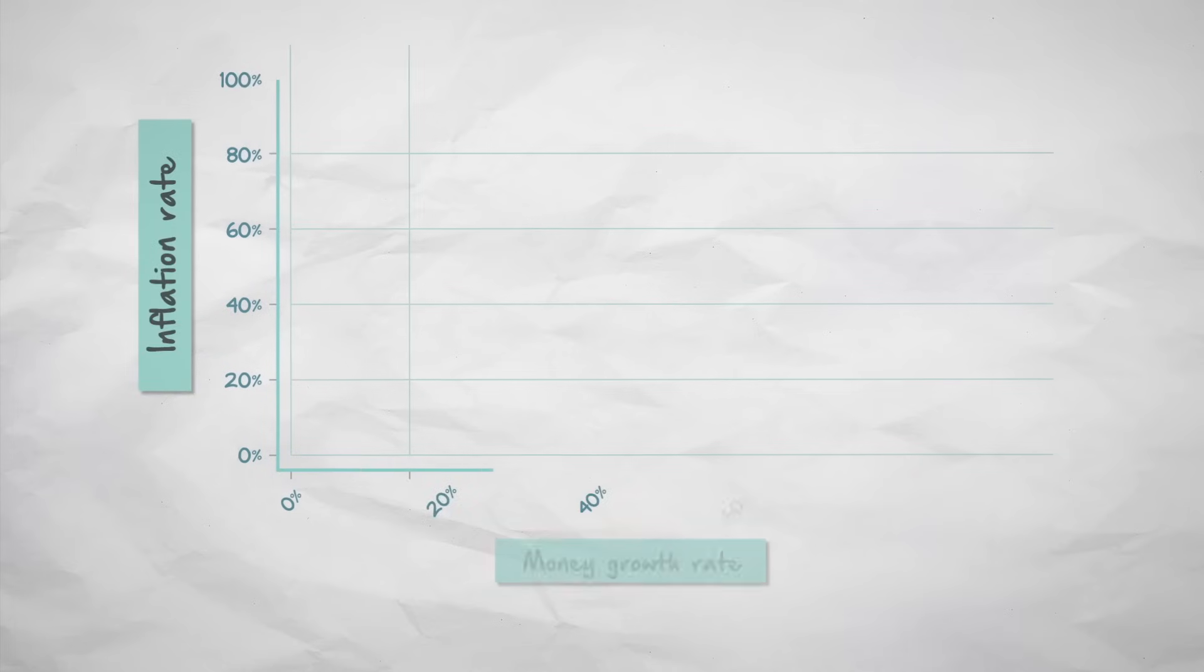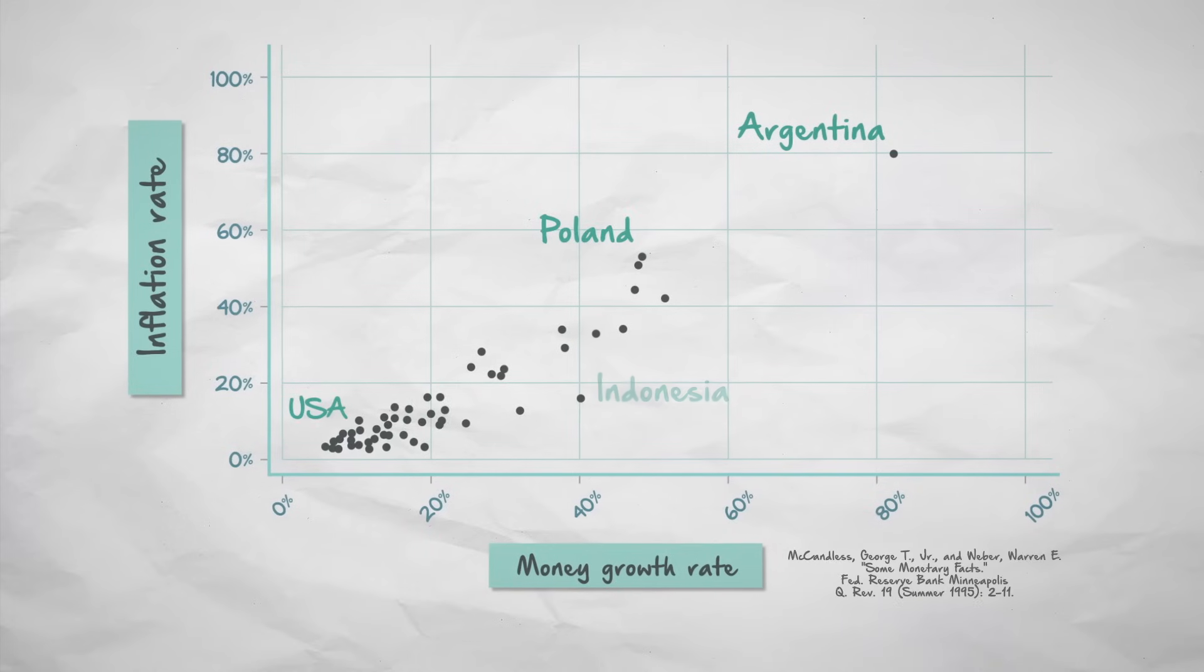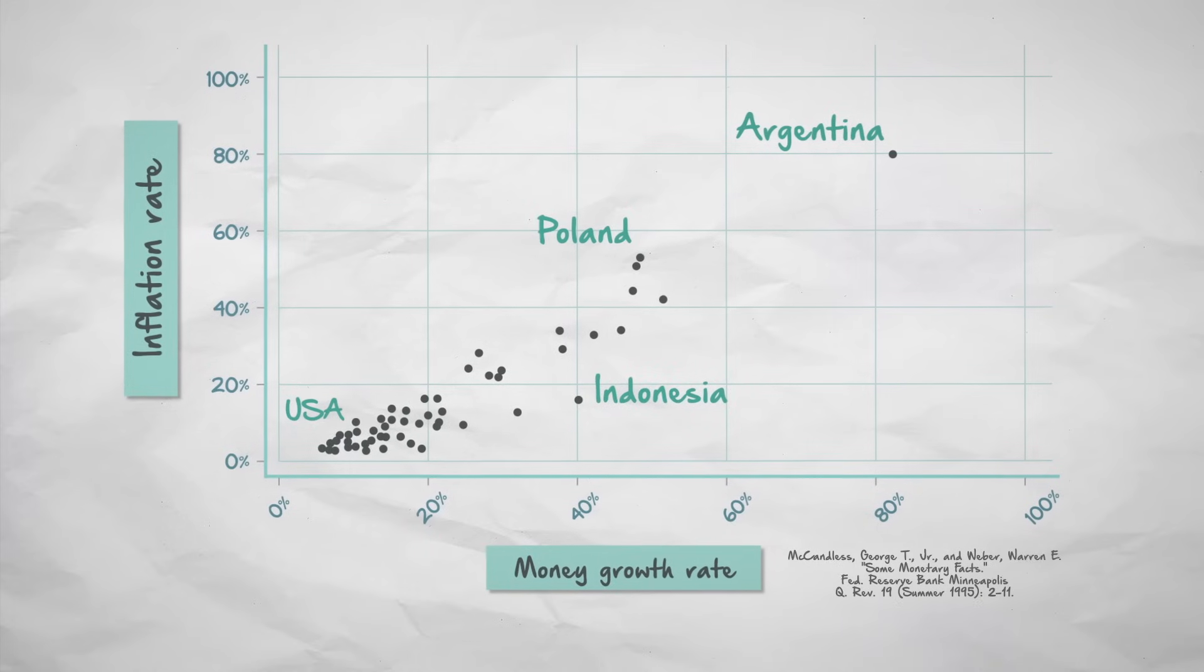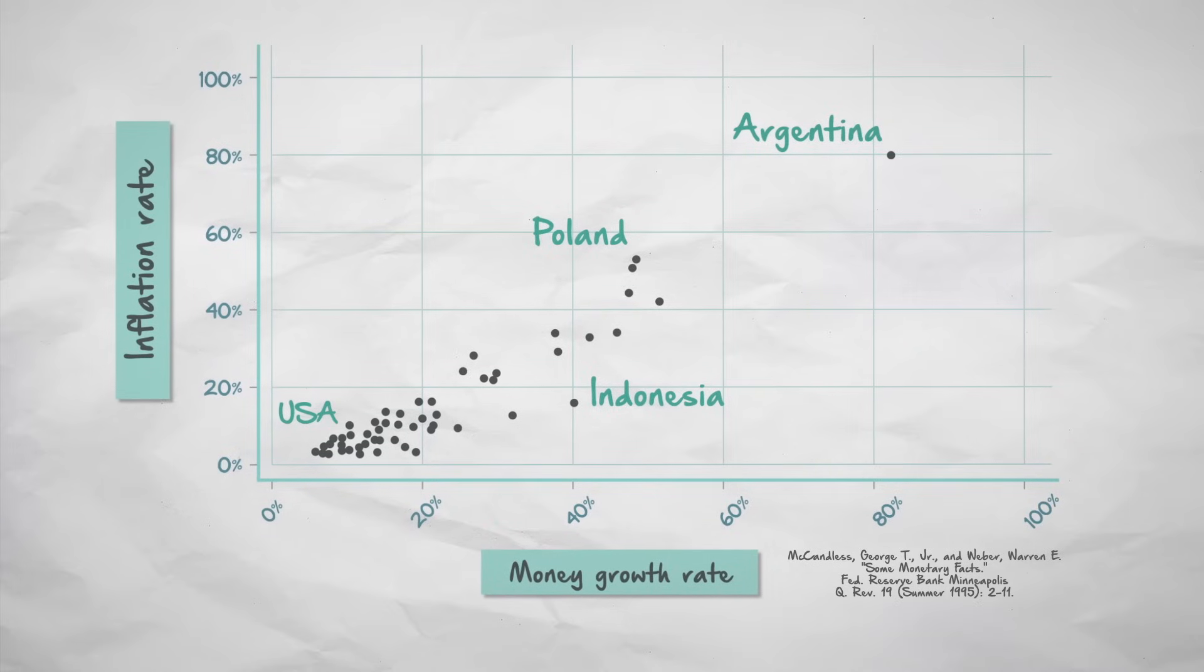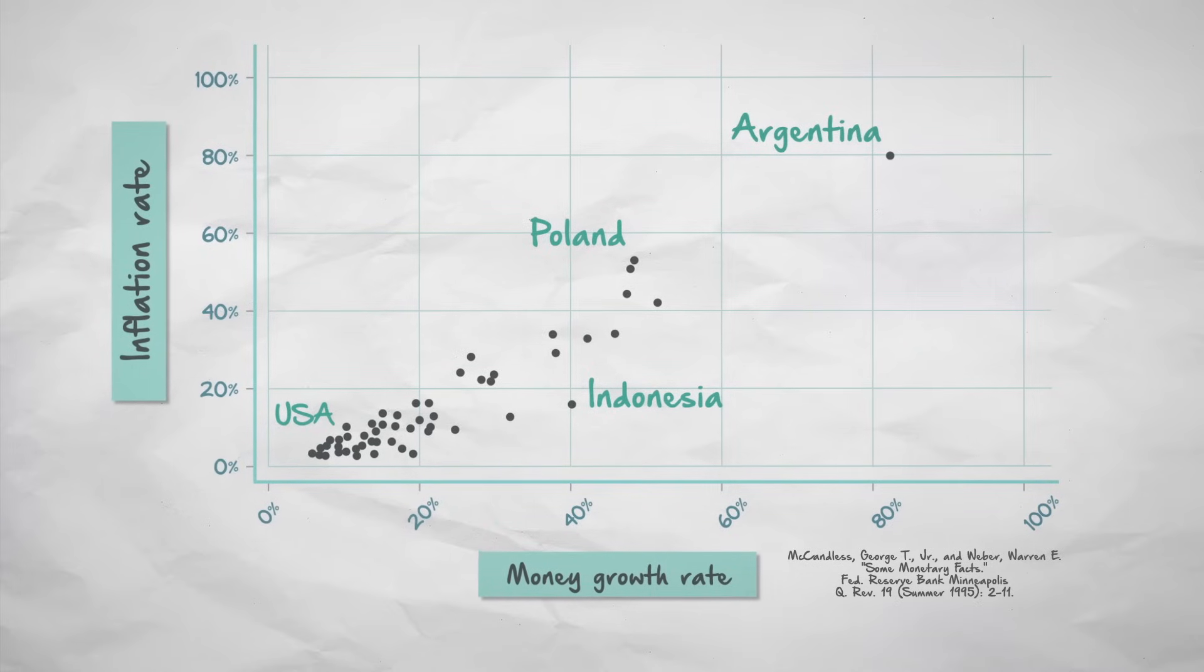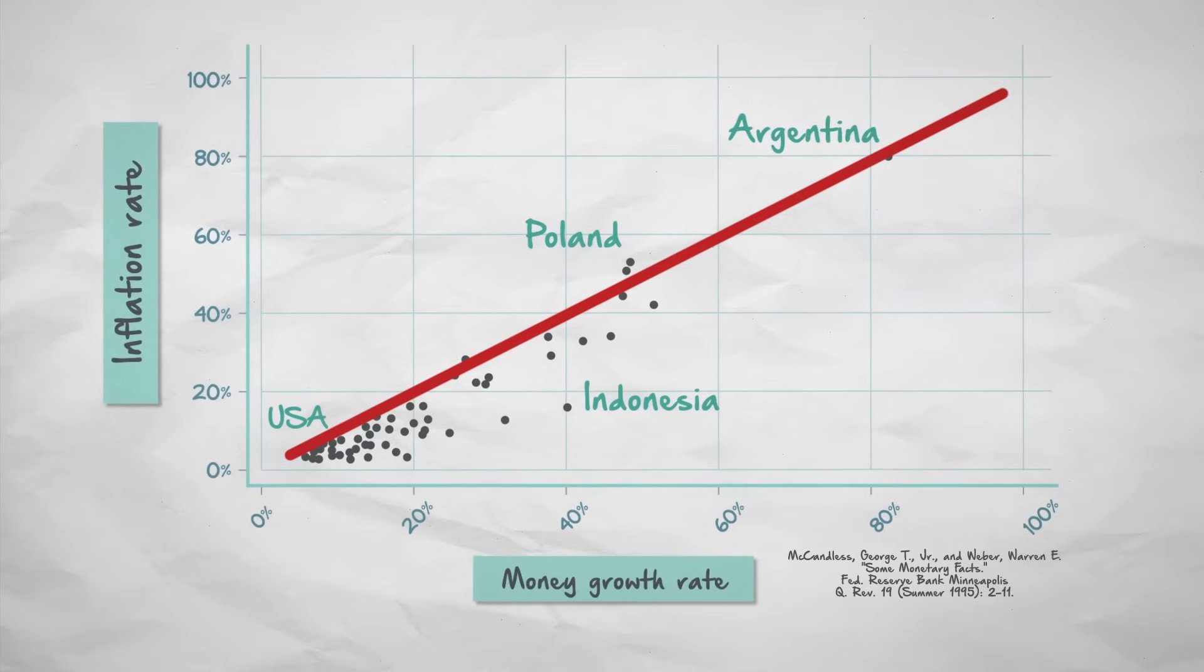What about other times and places? Here we show inflation rates on the vertical axis and money growth rates on the horizontal axis. This is for about 110 countries between 1960 and 1990. You can see that on average, the relationship is close to perfectly linear, with a one percentage point increase in the money supply growth rate leading to a one percentage point increase in the inflation rate.